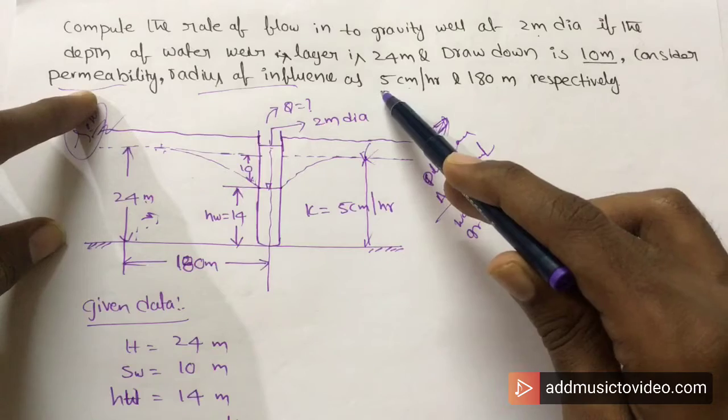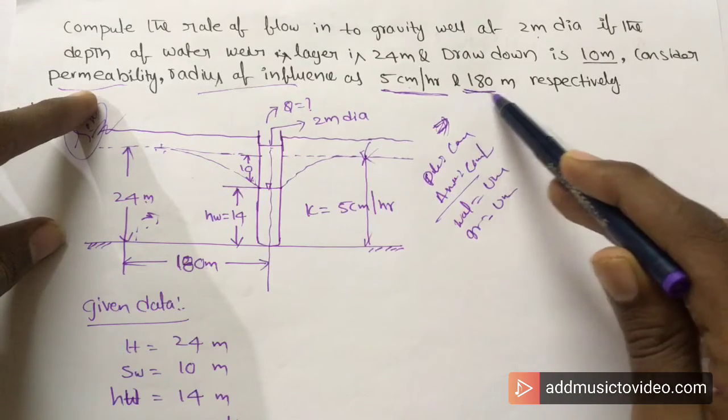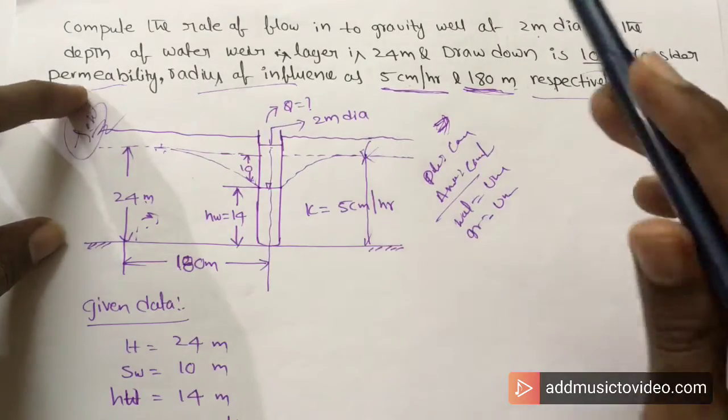Permeability is 5 cm per hour. Radius of influence is 180 meters respectively.